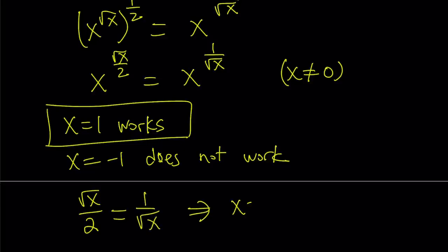Cross multiplication gives us x equals 2, and that's actually a valid solution. So x equals 2 is another solution. Are there any other solutions?